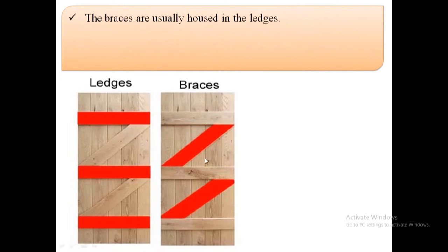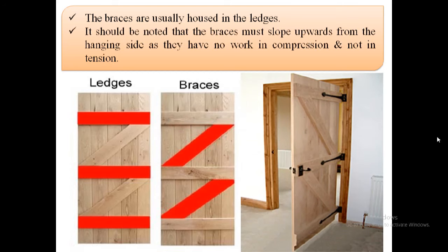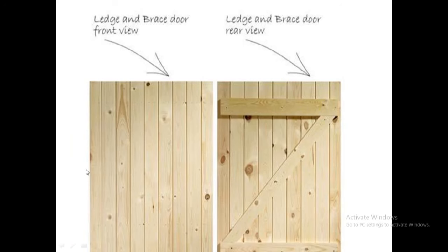These braces are usually housed in the ledges. In this image we can see this diagonal member is known as braces and these horizontal supports are known as ledges. It should be noted that the braces must slope upwards from the hanging side, as they have to work in compression and not in tension. The first image shows the front view of ledge and brace doors and the second image shows the rear view of ledge and brace doors.